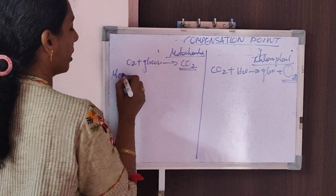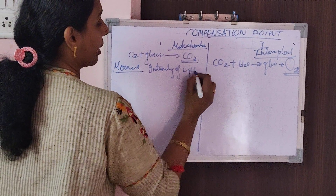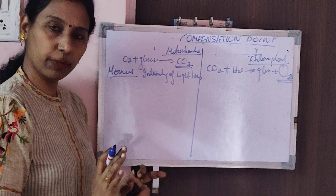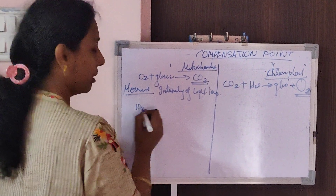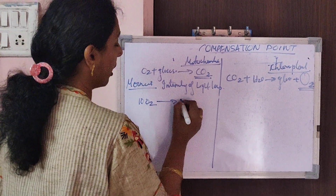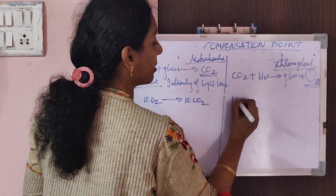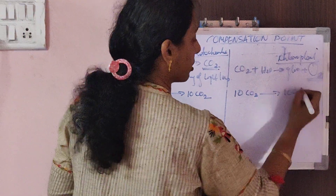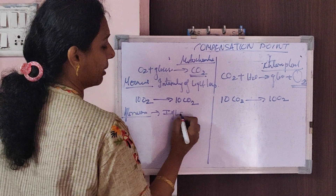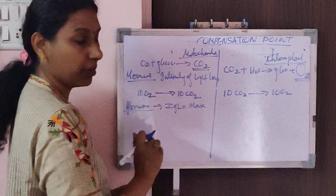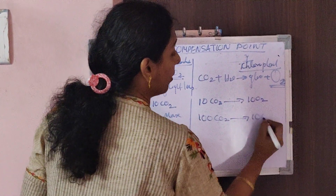During the morning hours, the intensity of light is very less. Mitochondria — cellular respiration will occur all the time, whether during the day or night. For example, suppose it is taking 10 oxygen for respiration and releasing 10 carbon dioxide. Whereas here in the chloroplast, during morning hours, it is also taking 10 carbon dioxide and releasing 10 oxygen. Now during the afternoon, when the intensity of light is maximum, photosynthesis is maximum — instead of taking 10 carbon dioxide, it wants 100 carbon dioxide and will release 100 oxygen molecules.